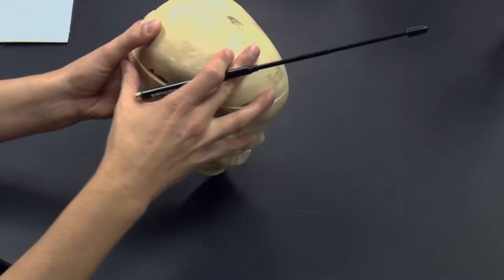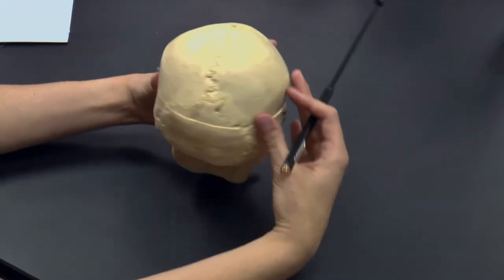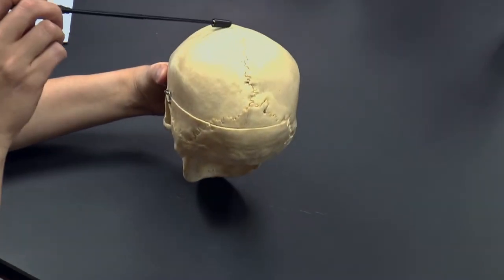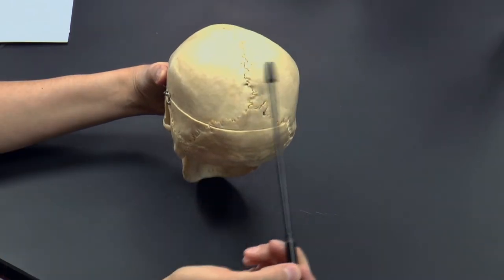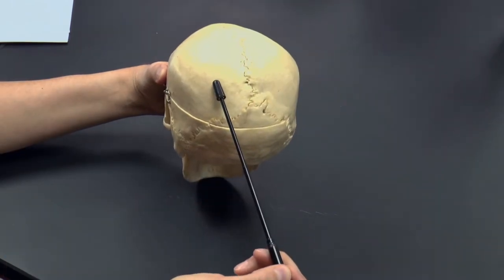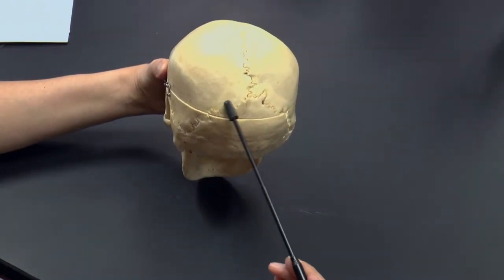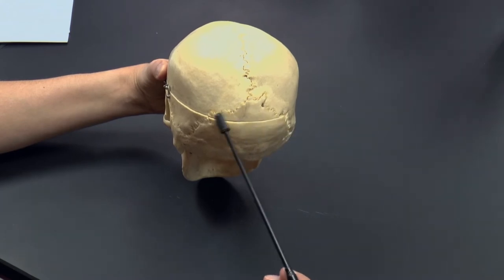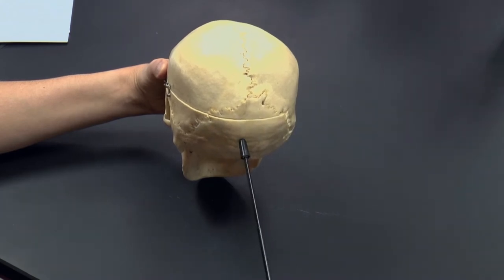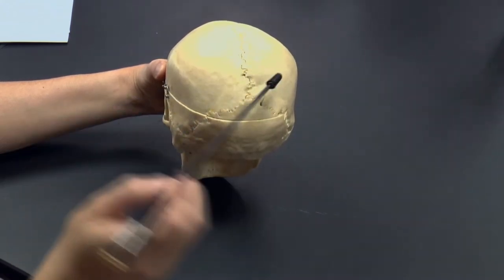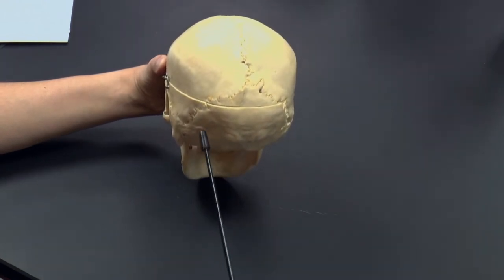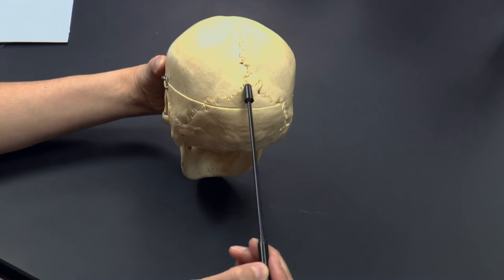Rotating back to the posterior view, you can see the sagittal suture connecting the two parietal bones. This is called the lambdoid suture, and the lambdoid suture connects the occipital bone to the two parietal bones on the right and the left.